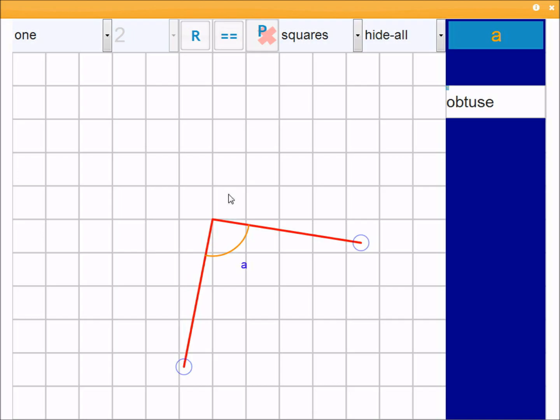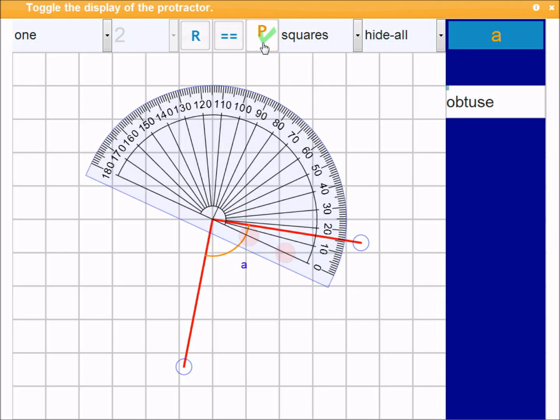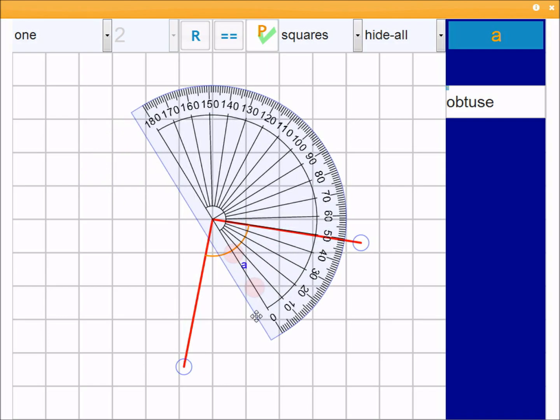You could also use this basic mode along with the protractor, which you can get from clicking this button here with the P. So now that the protractor displayed, you can try and measure this particular angle. I'm going to move the protractor around.